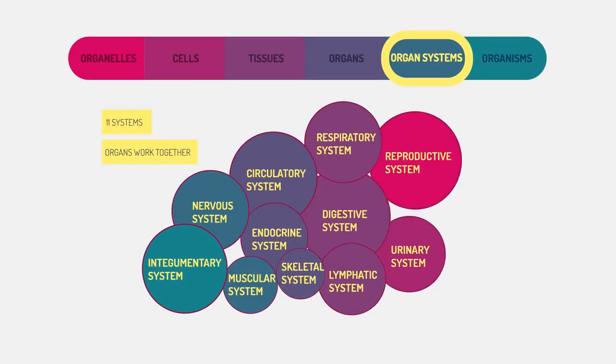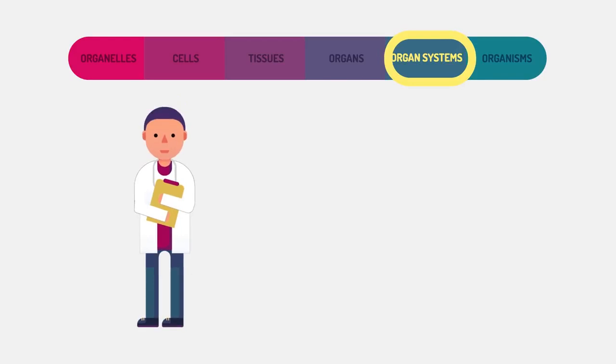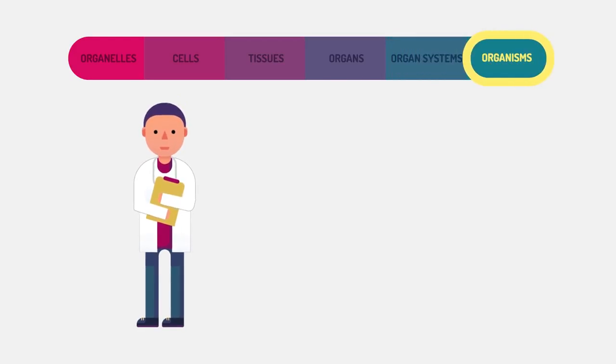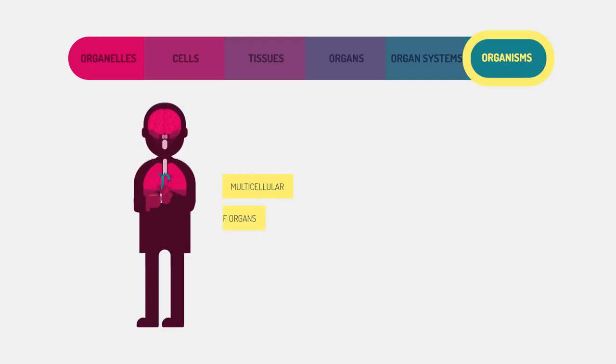Organisms are entire living things that can carry out all basic life processes. Multicellular organisms are made up of organ systems, but unicellular organisms such as bacteria or protists are made up of one cell.